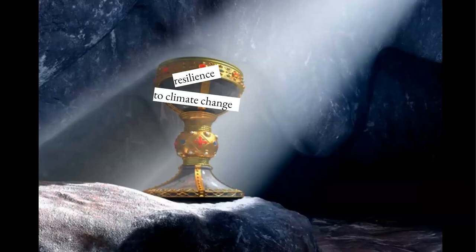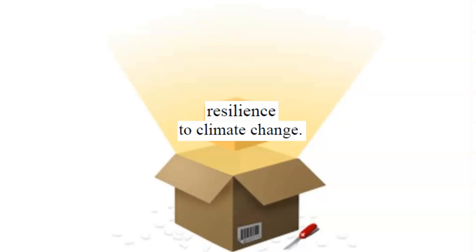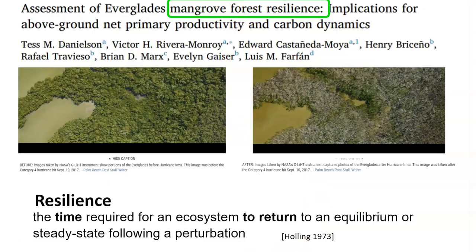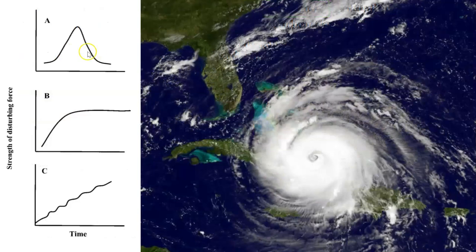Resilience to climate change has become the holy grail for restoration, but we need to unpack that term. Typically resilience is studied as the time to return to an equilibrium state following a perturbation, like Hurricane Irma that hit the mangroves in 2017. This is a pulse disturbance, so there's a before and an after.